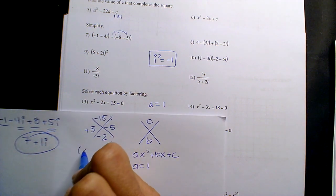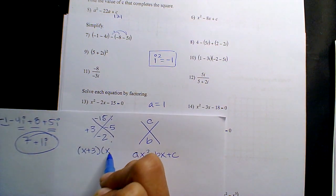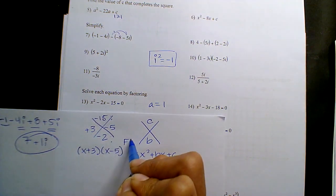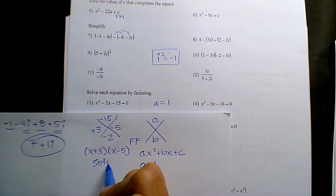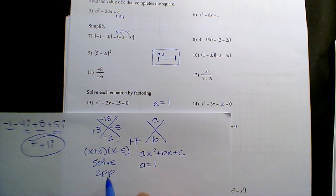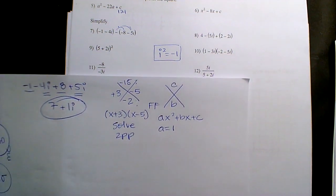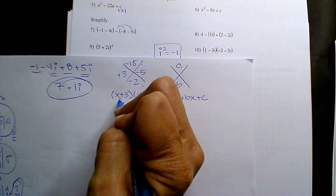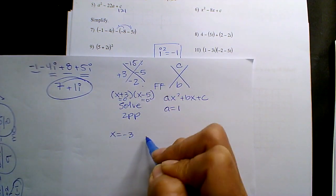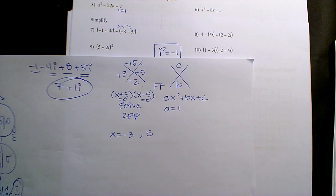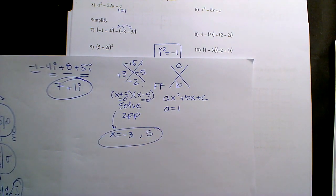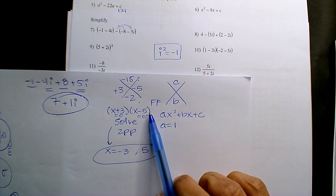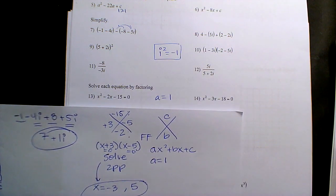Remember, this is factor form. If it's asking you to solve, you have to perform the zero product property. And so that's when you set them equal to zero. So x is negative 3 and positive 5. And so this is solving. Factoring are the binomials.